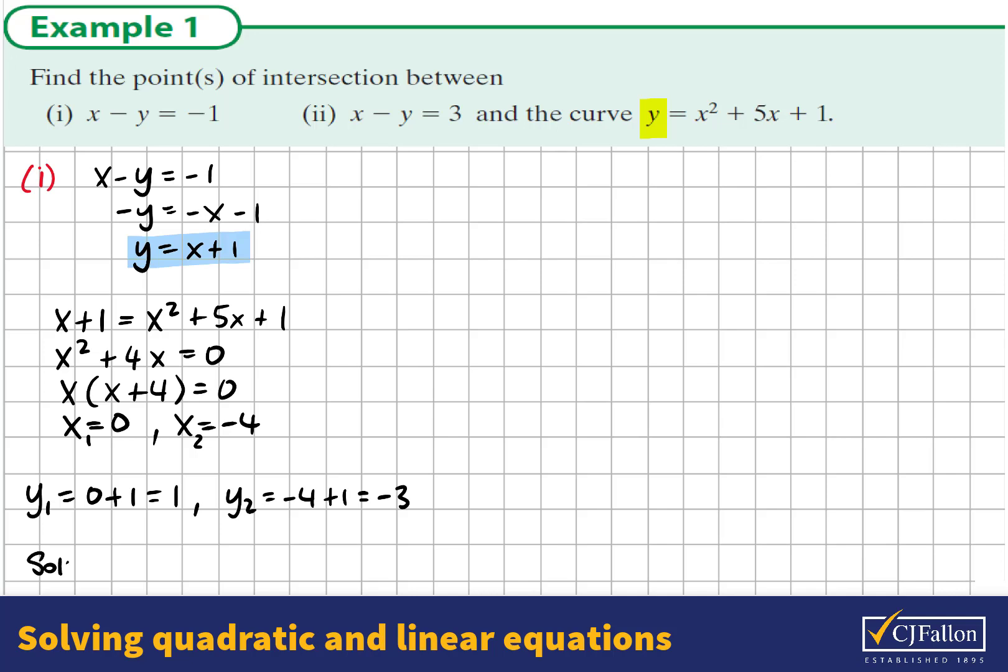So we get two pairs of coordinates. The solutions are: we have 0 matched up with 1, and we have negative 4 matched up with negative 3. So there are the points of intersection of those two curves.